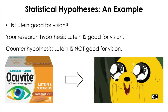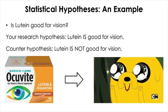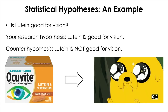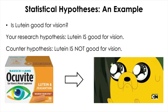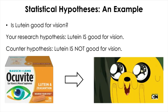Your research hypothesis will be that lutein is good for vision. To have a complete statistical hypothesis, you need another hypothesis, which is called a null hypothesis, to complement your research hypothesis. In this case, the null hypothesis goes against your research hypothesis, saying that lutein is not good for vision. You can think of the null hypothesis as a kind of devil's advocate.